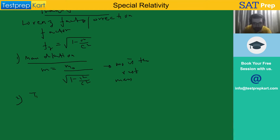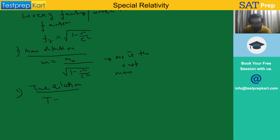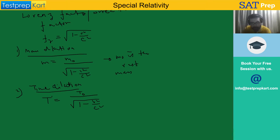The second is time dilation. Time dilation is when there is a change in the fabric of time. In time dilation, we have t prime equal to t₀ divided by under root of 1 minus v squared by c squared, where t₀ is the time at rest.